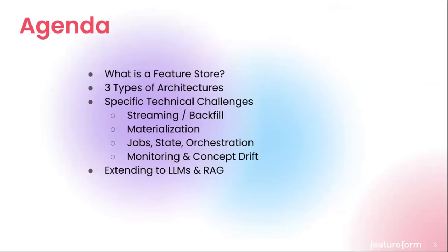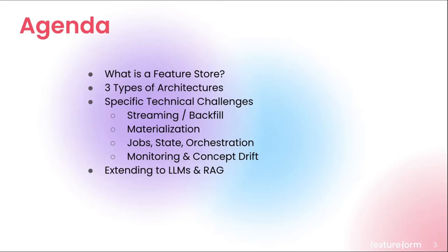The agenda today: we'll start with what is a feature store — the basics, what it is, why it's useful and why it exists. Then we'll cover three types of architectures that the ecosystem has converged on. I'll deep dive into four specific technical challenges: streaming and backfill, materializations, job state and orchestration, and monitoring concept drift. I'll also add a small section on LLMs and RAG, though I'll keep that brief and focus on things unique to our system.